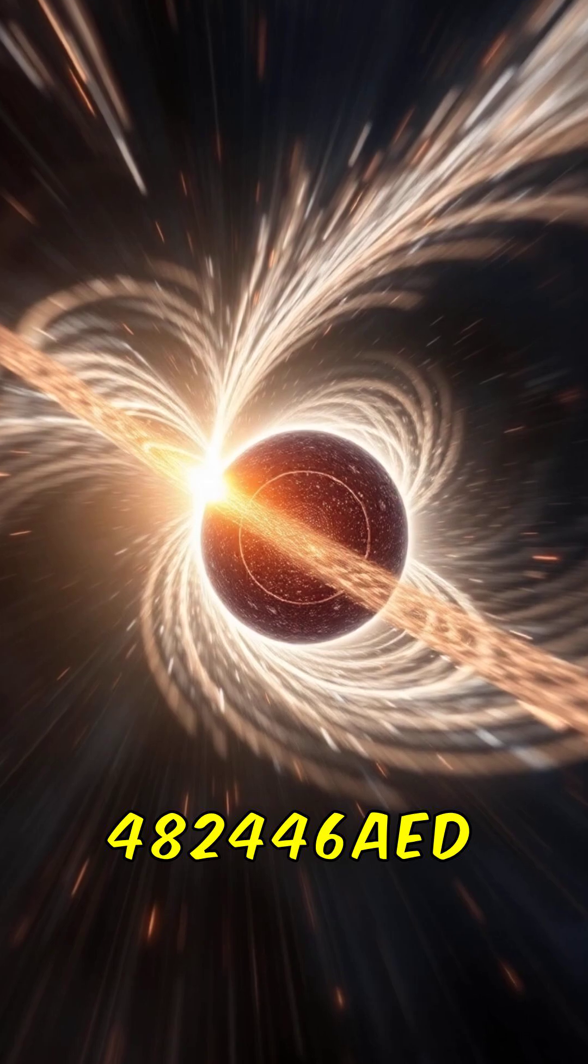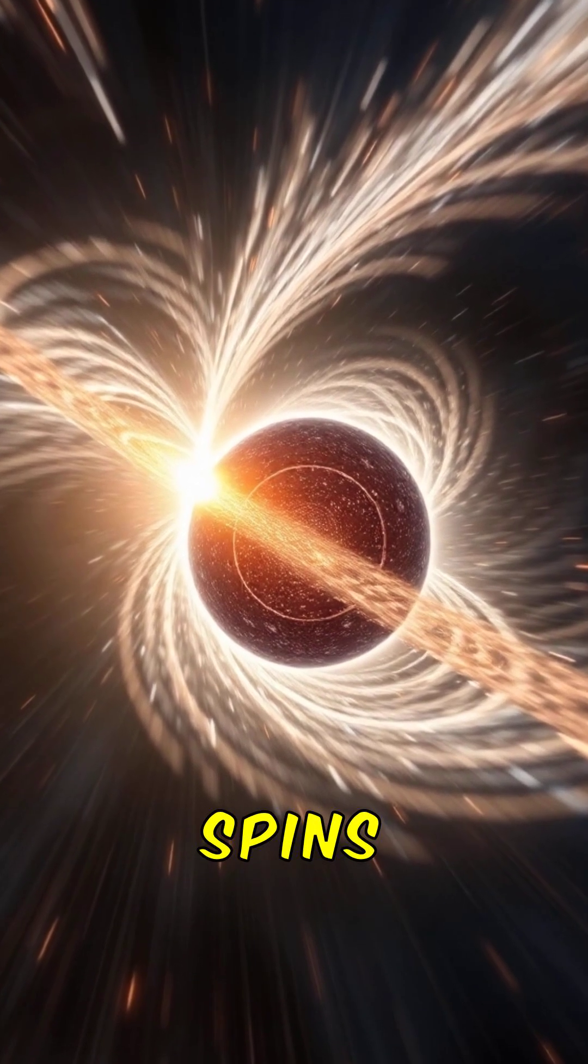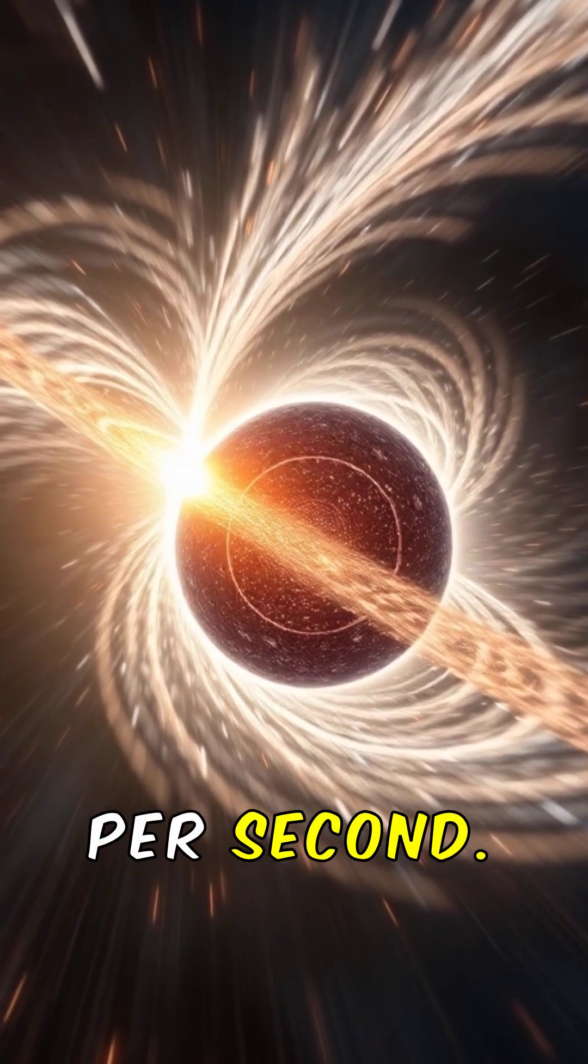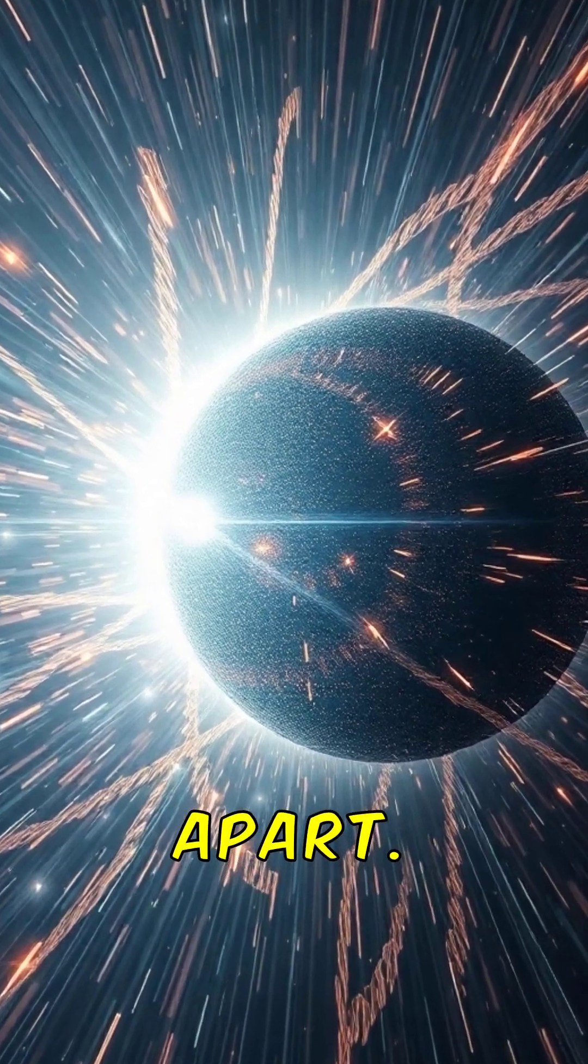The fastest spinning neutron star ever recorded, PSR J1748-2446AD, spins at 716 times per second. If it spun any faster, it would tear itself apart.